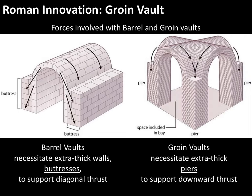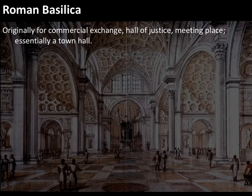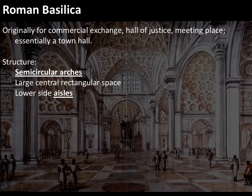These extra thick buttresses and chunky piers become one of the defining features of the style. We see both the barrel vault and the groin vault in the Roman basilica, and the basilica as a form becomes the antecedent to Romanesque churches. Roman basilicas were very large buildings with many functions — places for banking, going to court, meeting people. It's essentially a massive town hall combined with a shopping mall.